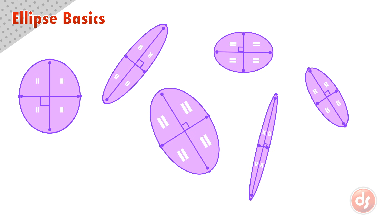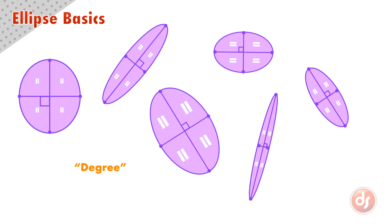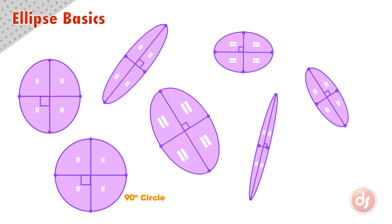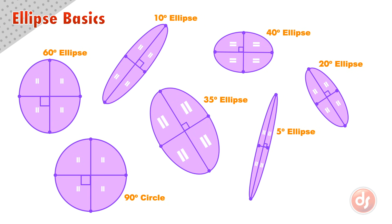The major and minor axes go through the widest parts of the ellipse, they are right angles to each other, and they divide the ellipse into four equal quadrants. We call the size of the ellipse its degree. A perfect circle is considered 90 degrees, so an ellipse would be anything less than 90 degrees, down to a straight line at zero degrees.